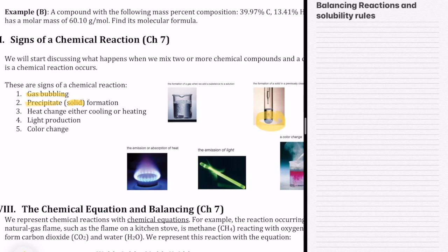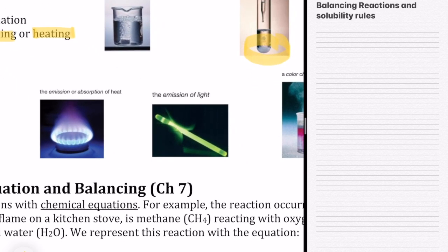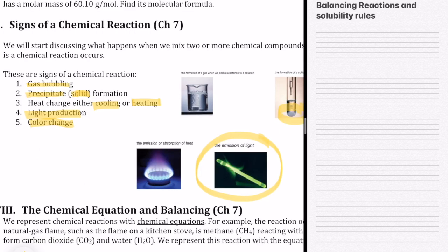Sometimes when you run a reaction, you feel that the container becomes hotter or colder, so there's a change in temperature. A lot of times you might see light being produced, like in the example of this glow stick. You bend it, the chemical reaction takes place, and you see light.